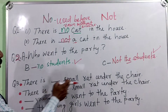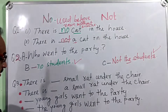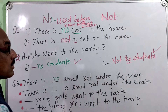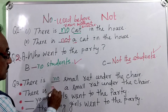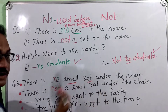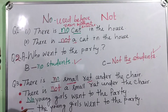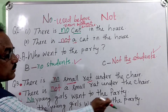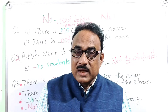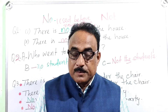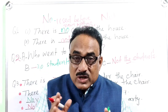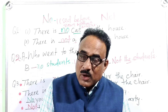Third question: There is dash small rat under the chair. Here there is no article, so we use 'no small rat.' But 'not' is used before a noun with an article. To summarize: 'no' is used before a noun without articles, but 'not' is used before a noun with articles.